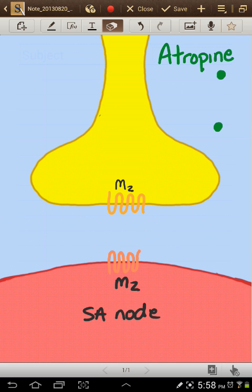So every year the question comes up in class: Sir, how can low-dose atropine actually decrease heart rate? Well, let's see how that can happen.